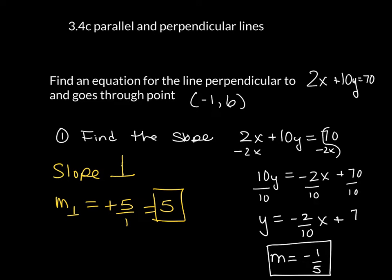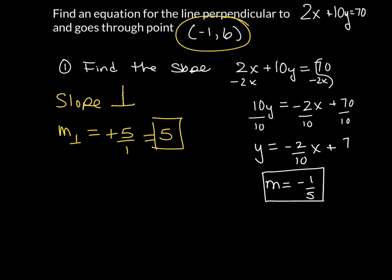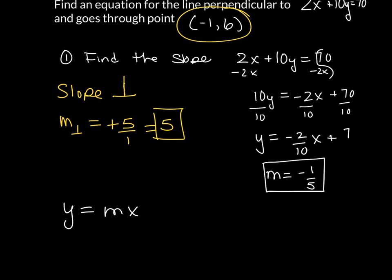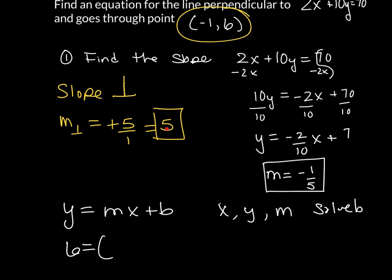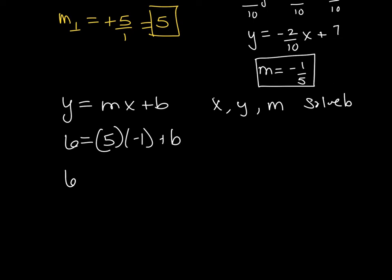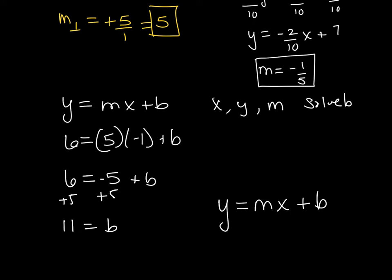All right, now we have everything we need. We want a line with slope 5 that goes through the point negative 1, 6. I use y equals mx plus b, and plug in x, y, and m to solve for b. So x is negative 1, y is 6, and the slope is 5: 6 equals 5 times negative 1 plus b. This gives 6 equals negative 5 plus b. Add 5 to both sides, and I get b equals 11. So the equation of the line in y equals mx plus b form is y equals 5x plus 11.